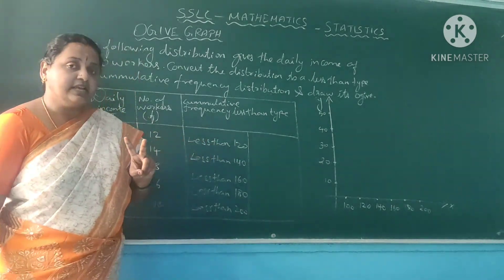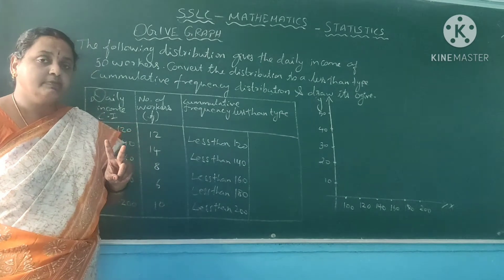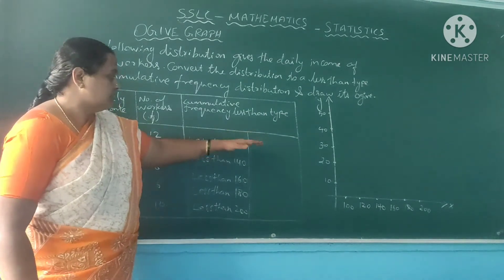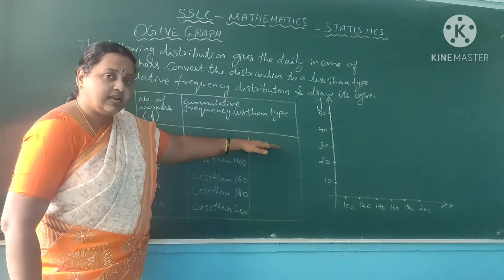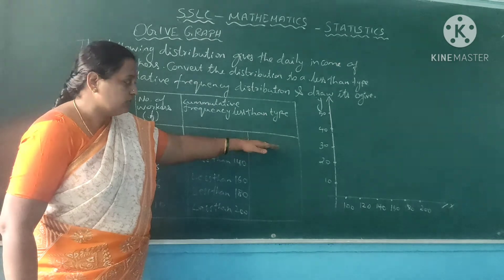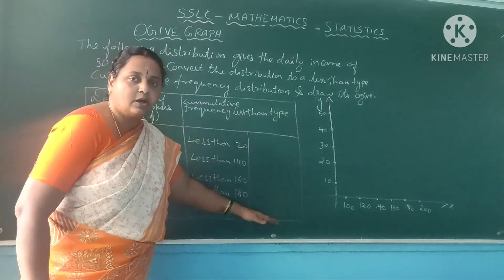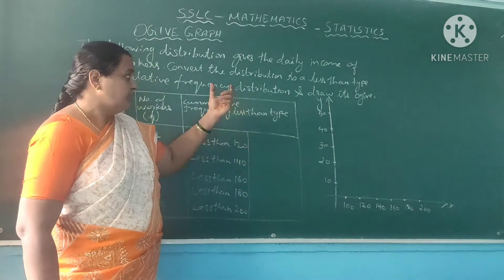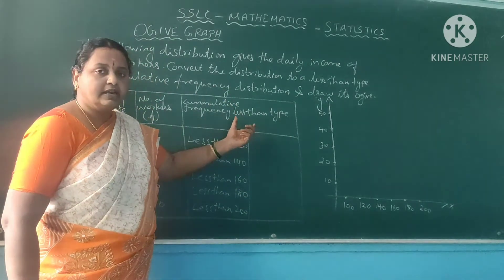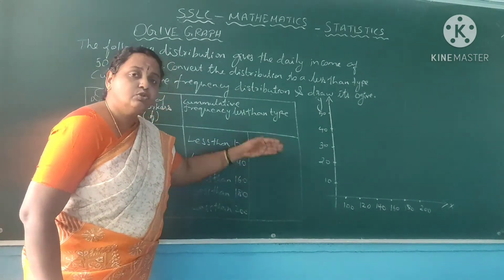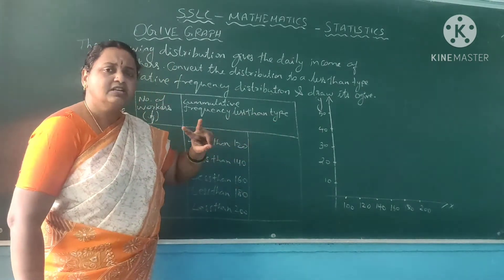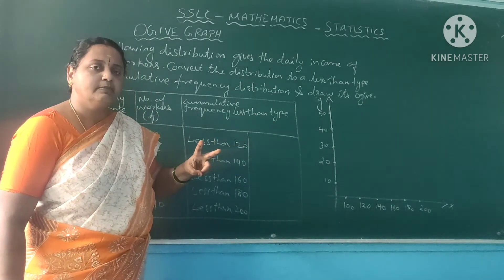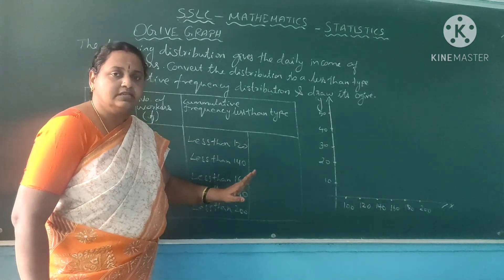This is the second point you should remember. For less than walker graph, you should start writing the cumulative frequency from top to down. Is it clear? If it is a more than walker graph, you should start from bottom to top. These are the two important points you should remember when writing the values.